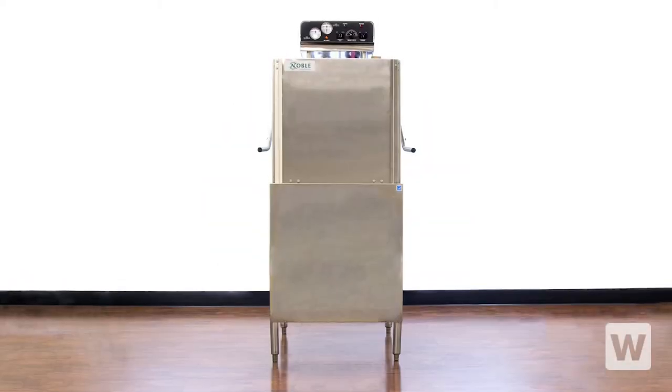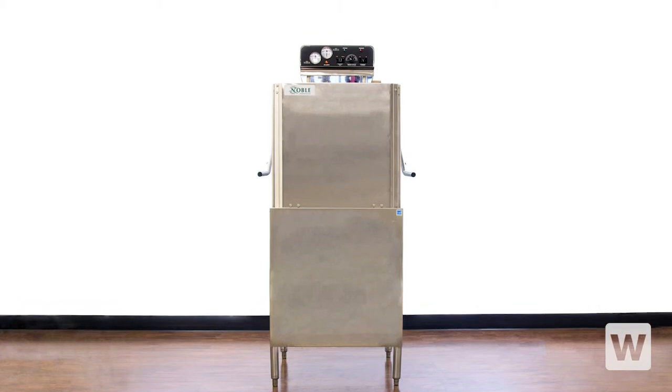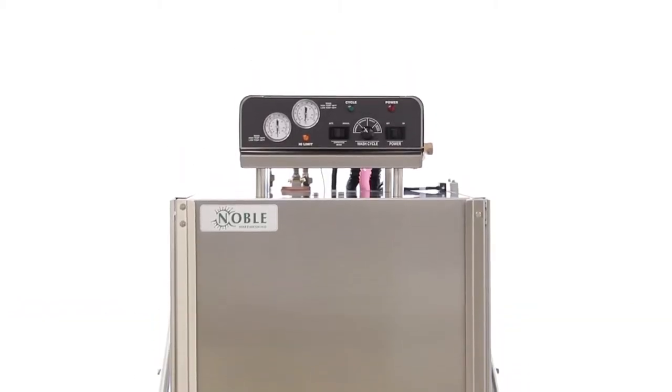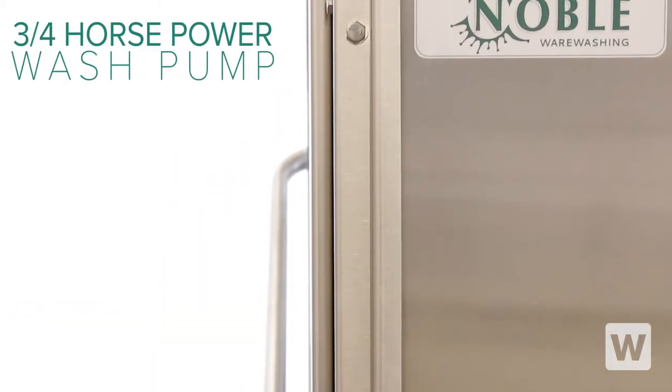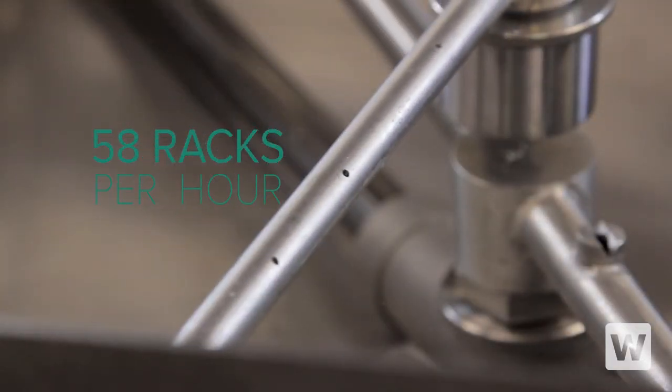The Noble Wearwashing HT180 High Temp Dishwasher is a terrific option for your busy restaurant. Featuring a 3/4 horsepower wash pump, this unit can clean up to 58 racks per hour.